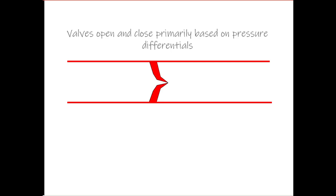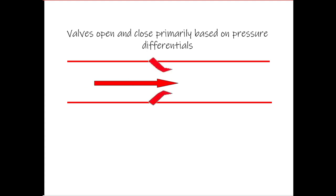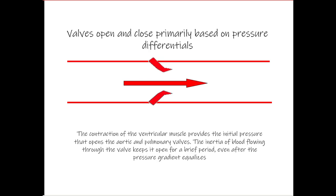As we look at valves and how they function in the heart, it's important to understand that valves will open or close primarily based on pressure differentials. If we have a valve with pressure built up behind it, that pressure will cause the valve to swing open. When our ventricle contracts, it provides pressure that will open the pulmonary or aortic valve and allow blood to pass through.